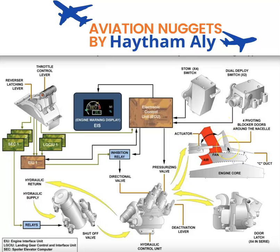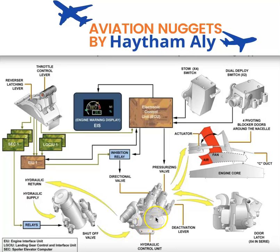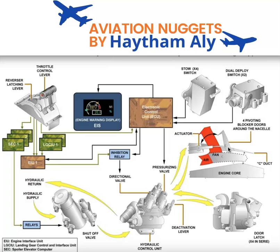Each blocker door is operated by a hydraulic actuator. This actuator will receive hydraulic fluid from the hydraulic control unit, which is the main component of the thrust reverser system. The hydraulic control unit allows hydraulic fluid to reach the actuator of the thrust reverser blocker door and to release the door latch. The door latches must be released in series before deploying the thrust reverser.